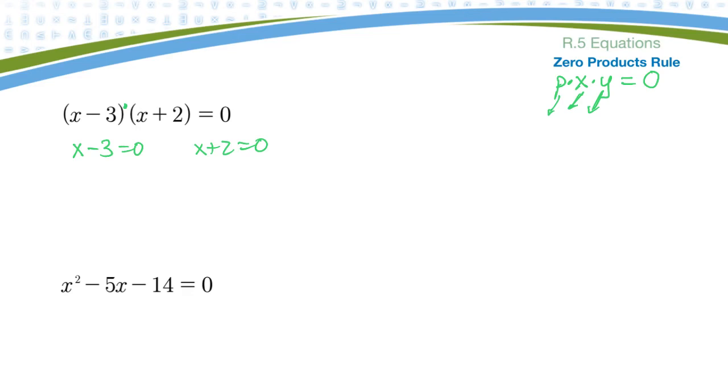Now I have a linear equation where I need to solve for x, so I'll add 3 to this side, add 3 to this side. I get x is equal to 3. And on the next one, I'll subtract 2 on both sides, so I get x is equal to negative 2. So my answers to this question are both x is 3 and x is minus 2.